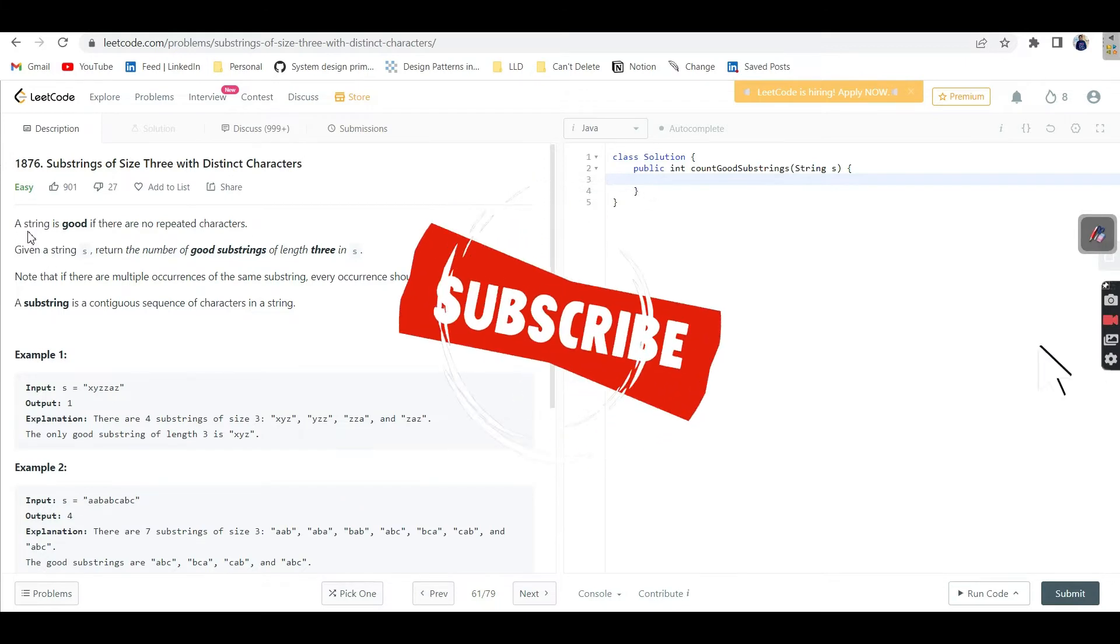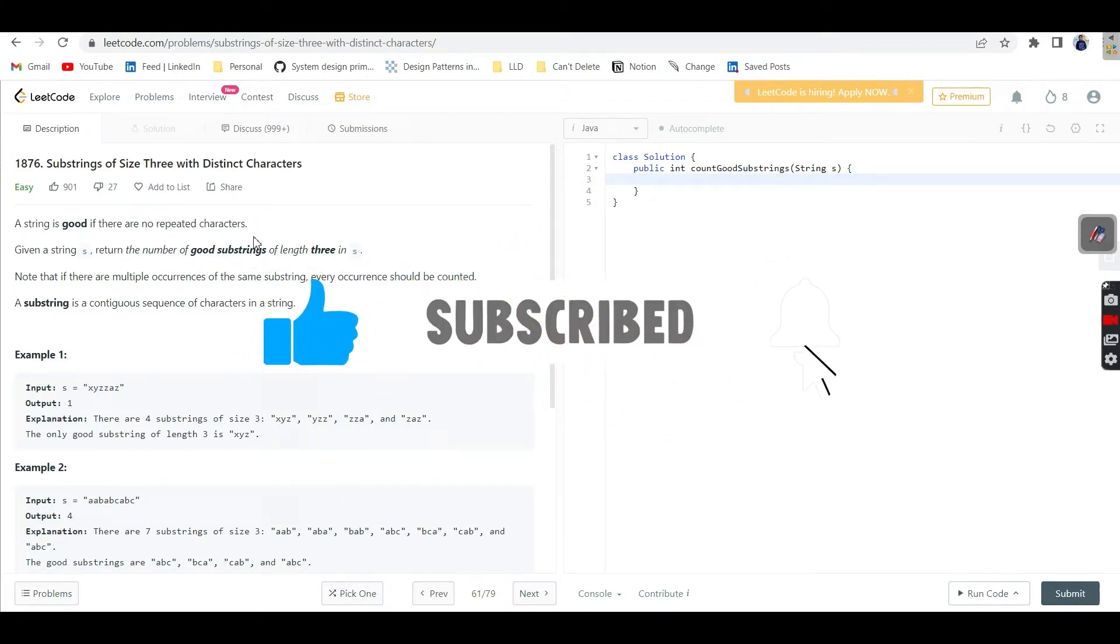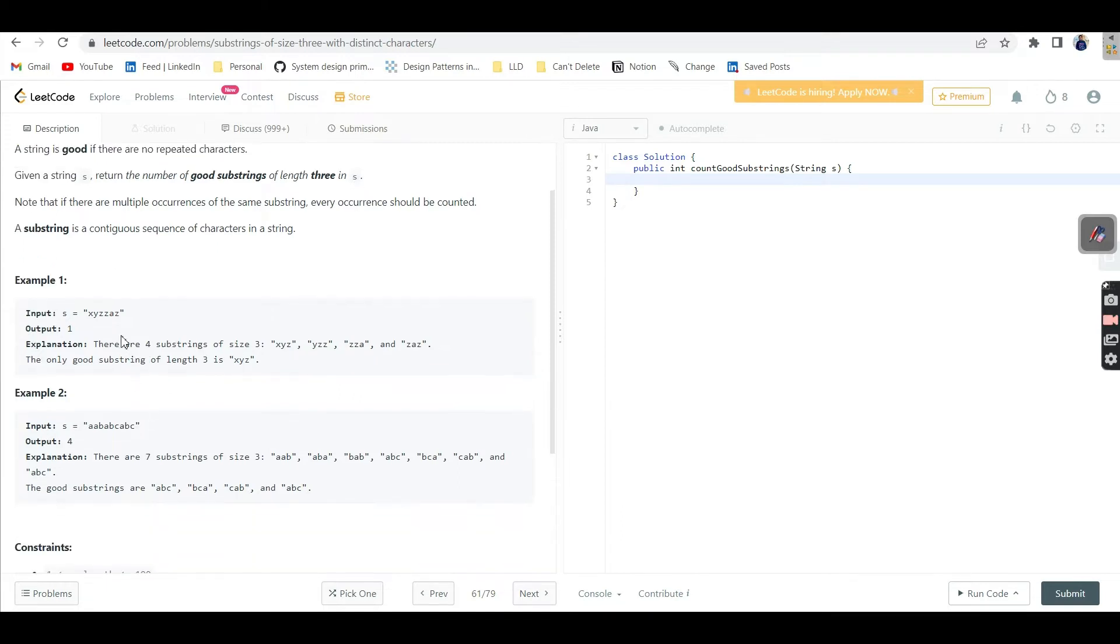Let's try to understand this problem. A string is a good string if there are no repeated characters inside that particular substring. We need to return the number of good substrings of length 3 in S. Note that if there are multiple occurrences of the same substring, every occurrence should be counted. A substring is a contiguous sequence of characters in a string. Here we have x, y, z, z, a, z. They are asking about length 3, so we take length 3 substrings. First, x, y, z - every character is unique.